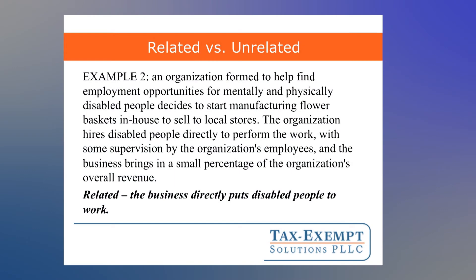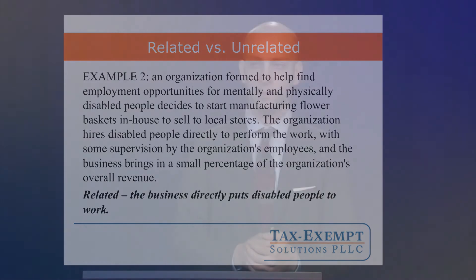It's important to note that even if the activity is unrelated, it still may not trigger UBIT — we've got to go through all three parts of the test. Now let's look at another example. An organization formed to help find employment opportunities for mentally and physically disabled people decides to start manufacturing flower baskets in-house to sell to local stores. The organization hires disabled people directly to perform the work with some supervision. The activity itself is what furthers the organization's purpose — the organization is formed to put disabled people to work, and they've started a business that does that directly. So this would be a related activity.